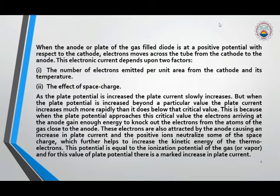The first one is the number of electrons emitted per unit area from the cathode and the temperature of the cathode, and the second one is the effect of space charge. The space charge is the cloud of charges, either positive or negative.